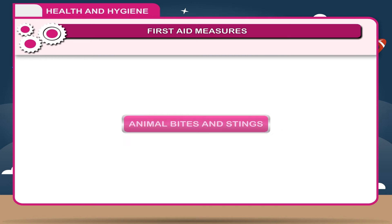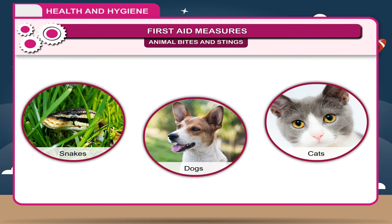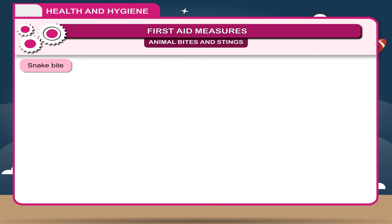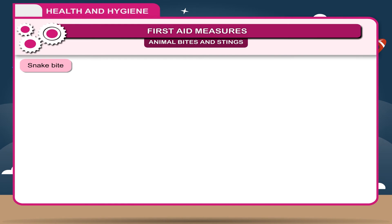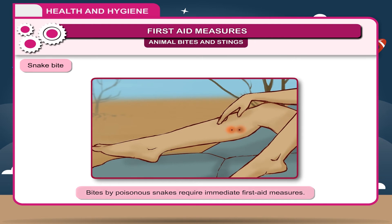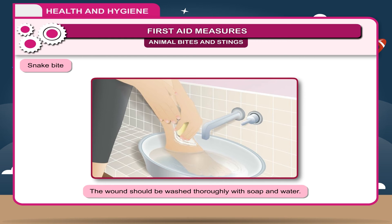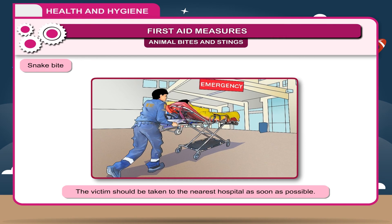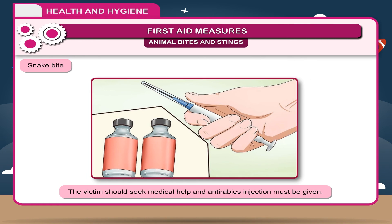Animal bites and stings. Animals like snakes, dogs, cats and certain insects may bite humans, which may result in dangerous consequences. Snake bite: Bites from non-poisonous snakes do not require treatment beyond cleaning the wound. Bites of poisonous snakes require immediate first aid — tightly bind the area to prevent the venom from spreading rapidly through the bloodstream. The wound should be washed thoroughly with soap and water, and the victim should be taken to the nearest hospital as soon as possible. Bites from other animals should be thoroughly washed and an antibiotic ointment applied. The victim should seek medical help and an anti-rabies injection must be given.